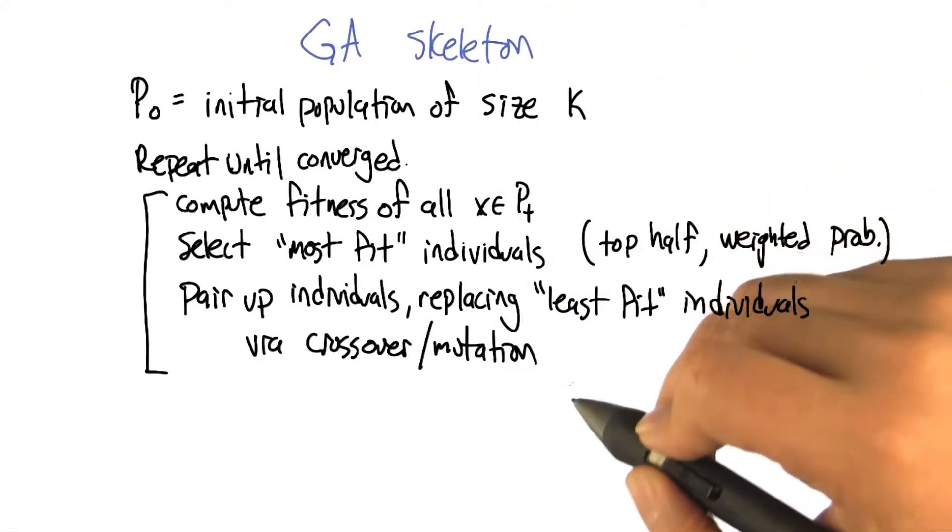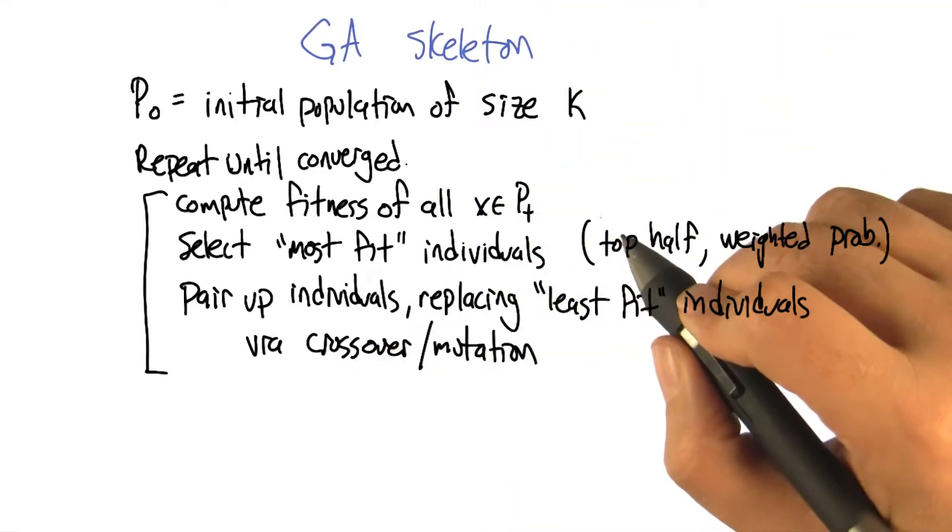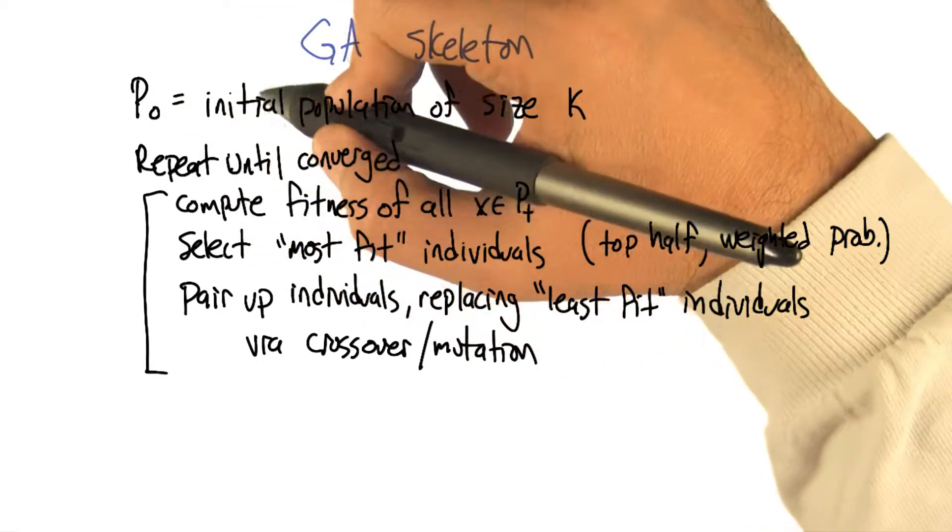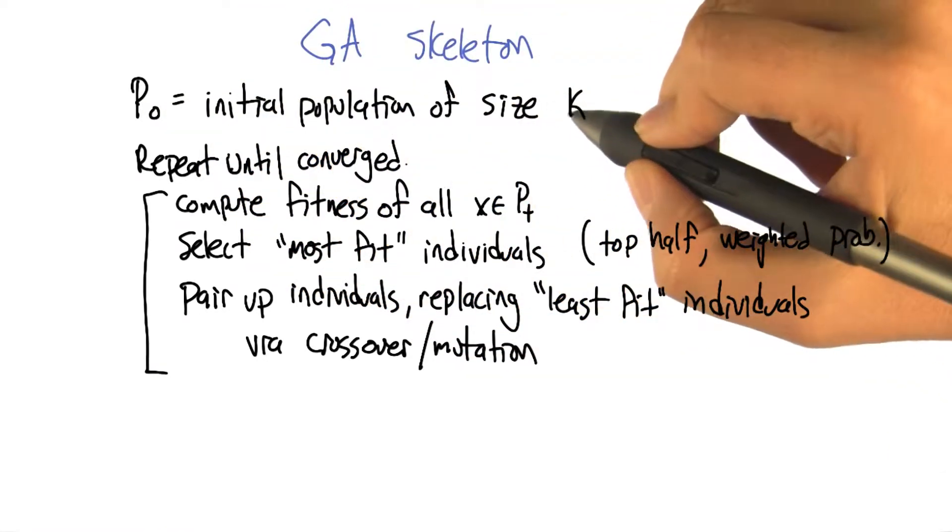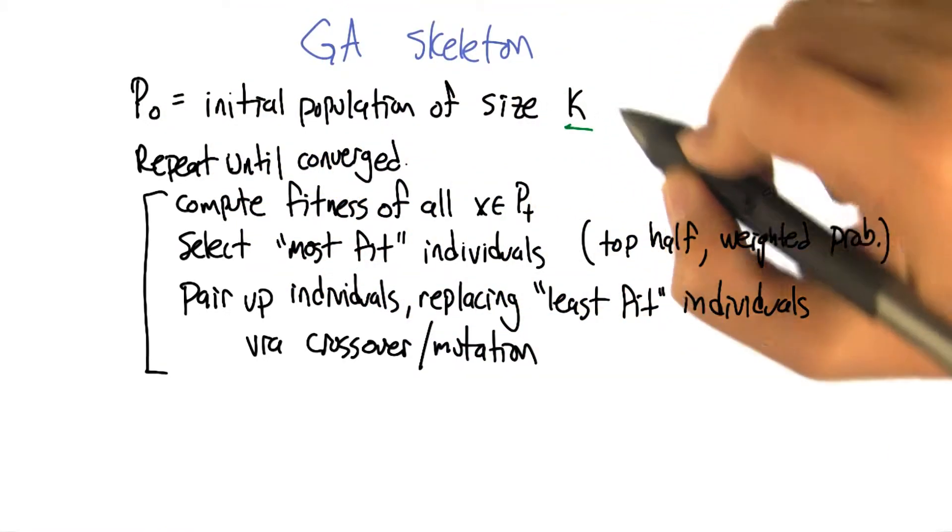Here's a skeleton of an algorithm that implements a genetic algorithm. What we need to do is start off with some initial population, and usually the population size is fixed to some constant we'll call K.